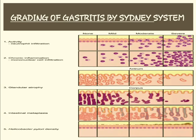This image shows the grading of gastritis by the Sydney system. Grading ranges from none to mild, moderate, or severe. The parameters assessed include: (1) activity — neutrophilic infiltration; (2) chronic inflammation — mononuclear cell infiltration. The number of cells increases as disease severity increases. Glandular atrophy affects mainly the antrum and corpus. Intestinal metaplasia, the precursor of adenocarcinoma, is also assessed, as is Helicobacter pylori density, which increases with severity.